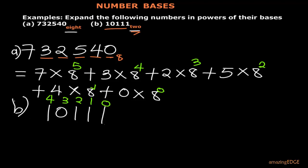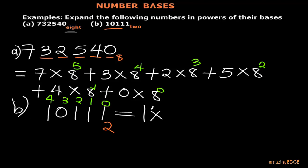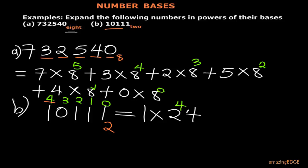Now we can do the expansion. Remember, we are working in base 2. The first digit is 1, and it is assigned the power of 4, so we have 1 times 2 to the power 4. The next digit is 0, and it is assigned the power of 3, so we have 0 times 2 to the power 3.